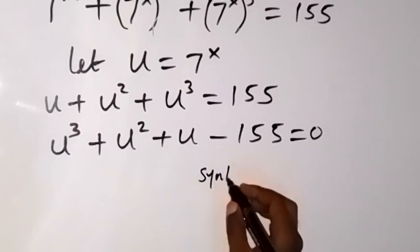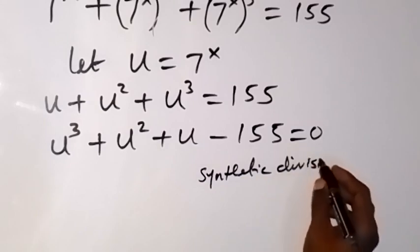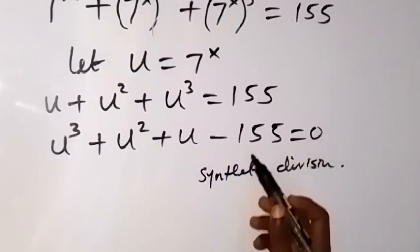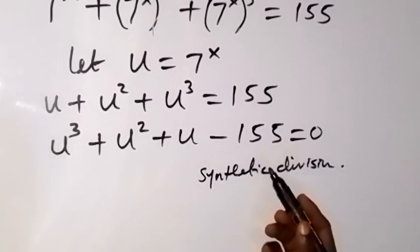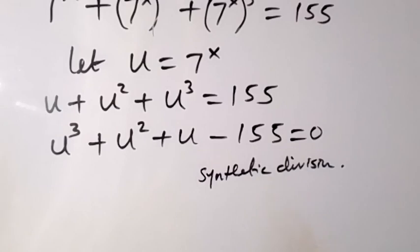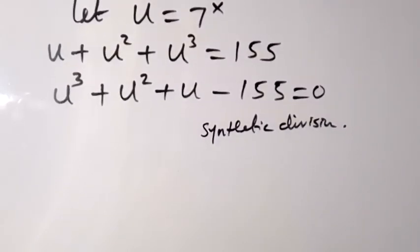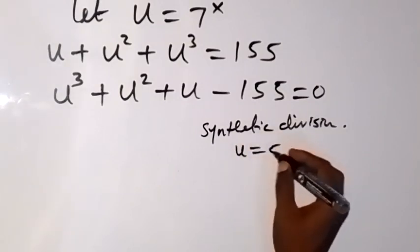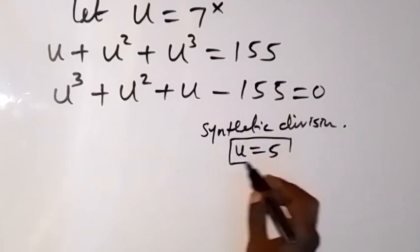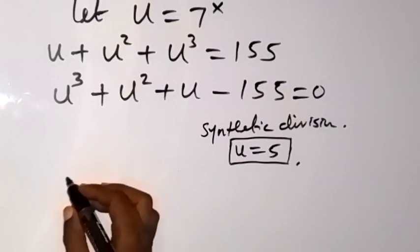Let's use synthetic division. The factors of 155 start from 1, then 5. Let's try u equals 5. When we use u equals 5 to divide this polynomial using synthetic division.